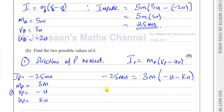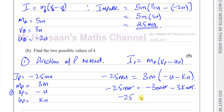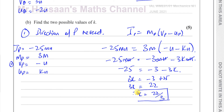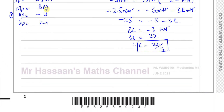Expanding: minus 25mu equals minus 3mu minus 3kmu. Cancelling the common factor mu: minus 25 equals minus 3 minus 3k. Rearranging: 3k equals minus 3 plus 25, so 3k equals 22, therefore k equals 22 over 3. That's the first possible value of k, for the case where the direction of P is reversed.